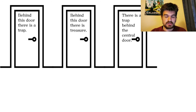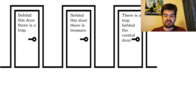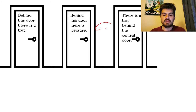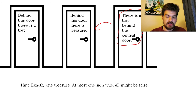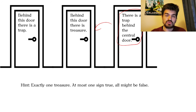Now we have three doors and they have three different things in them. The first one says behind this door there's a trap. The other one says behind this door there's treasure. And the last one says there is a trap behind the central door. The hint says our guide, who is always right, says there is exactly one treasure — so exactly one treasure and two traps — and at most one of those signs is true, but it's possible that none of them are true.